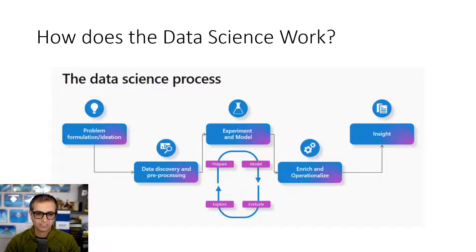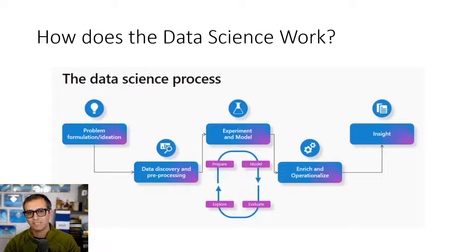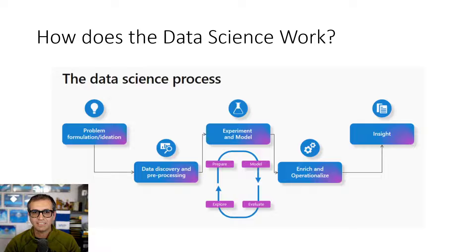Data science is a process like what you see in this slide. The process usually starts with defining a problem — for example, when a customer purchases something, we want to recommend what other things they should purchase. Then there is a process of data discovery and data exploration: finding out what columns and data you have, what the quality of the data is, and checking this data.